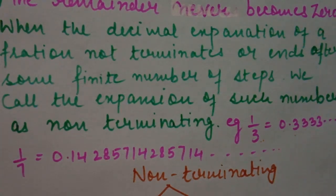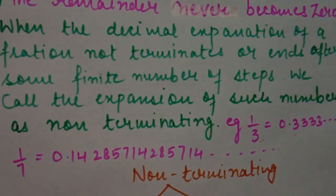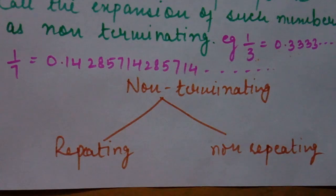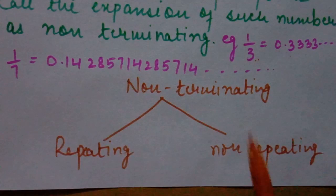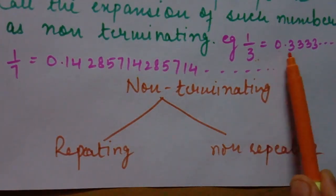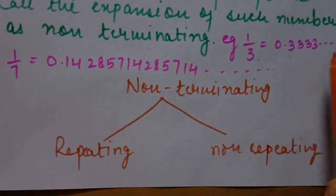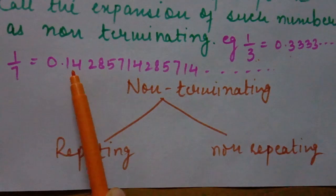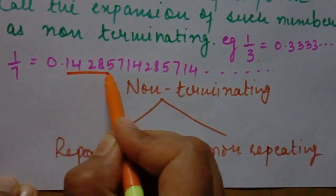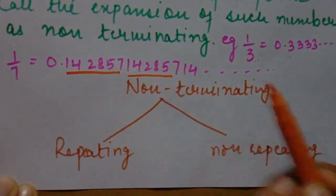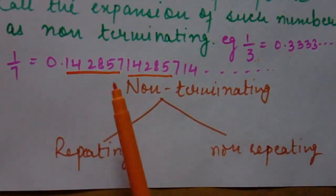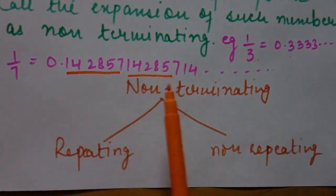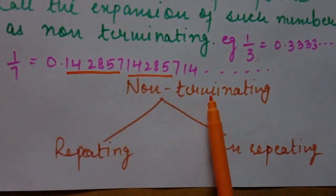So these are the two cases of decimal expansion of a real number: first, when the remainder becomes 0 — terminating; second, when the remainder never becomes 0 — non-terminating. Notice that in 1/3 only one digit repeats, but in 1/7 the pattern 142857 repeats again and again.